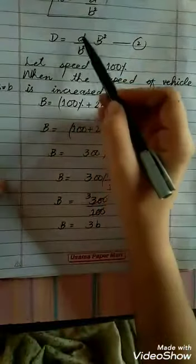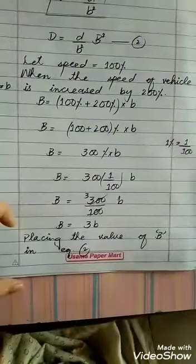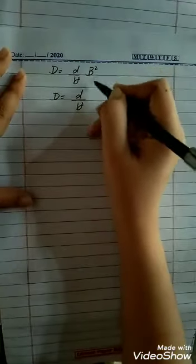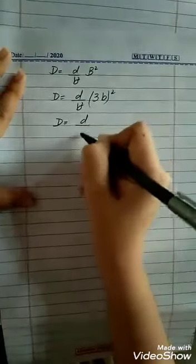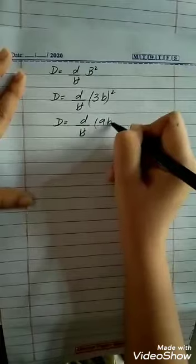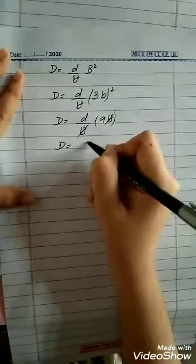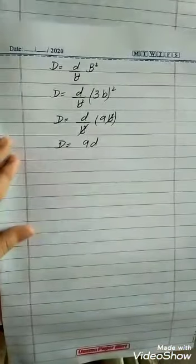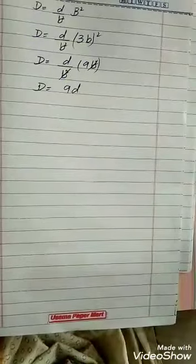Using equation 2, D is equal to (d by b squared) into B squared. We place the new value of capital B which is 3b, so B squared is (3b) squared which equals 9b squared. Therefore D is equal to (d by b squared) into 9b squared. B squared cancels, leaving the new braking distance D is equal to 9d. The new distance is 9d.